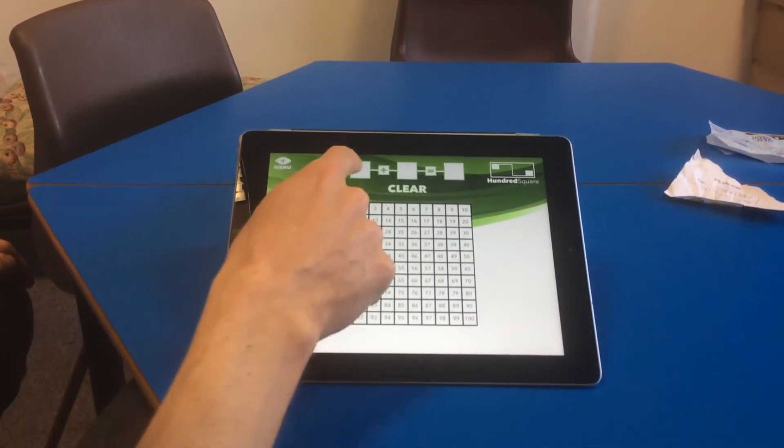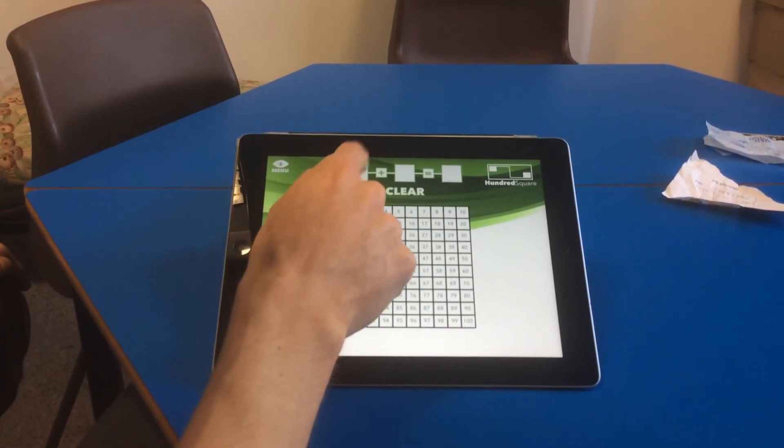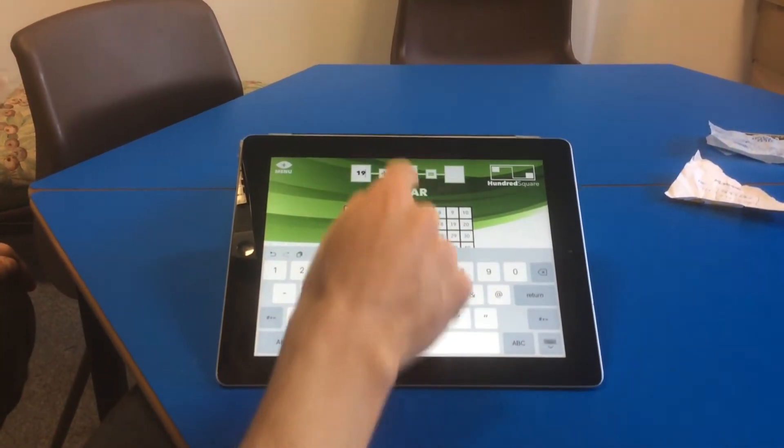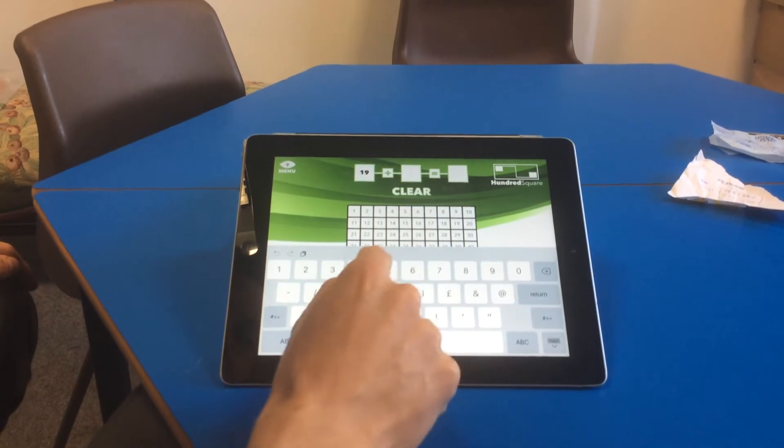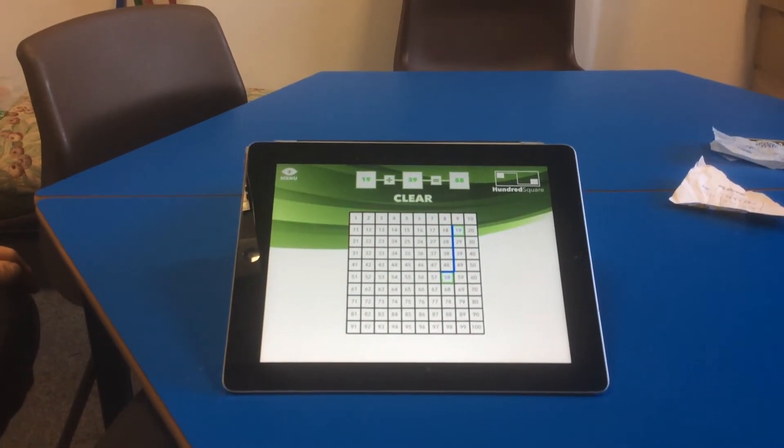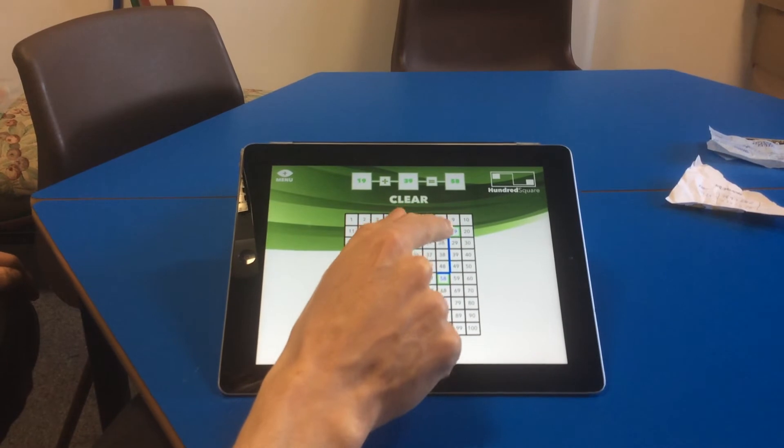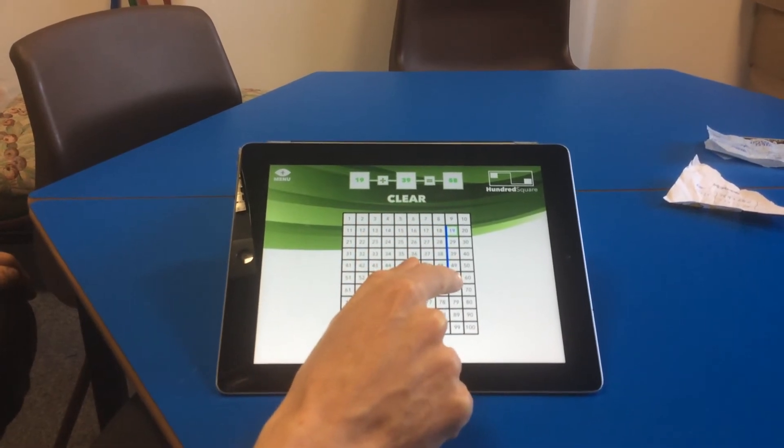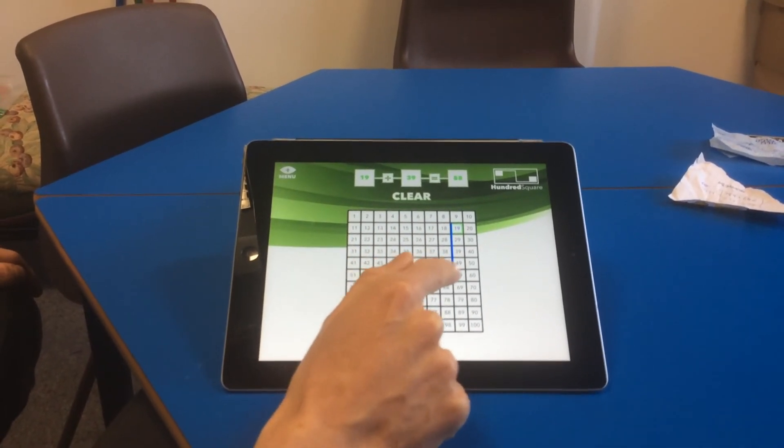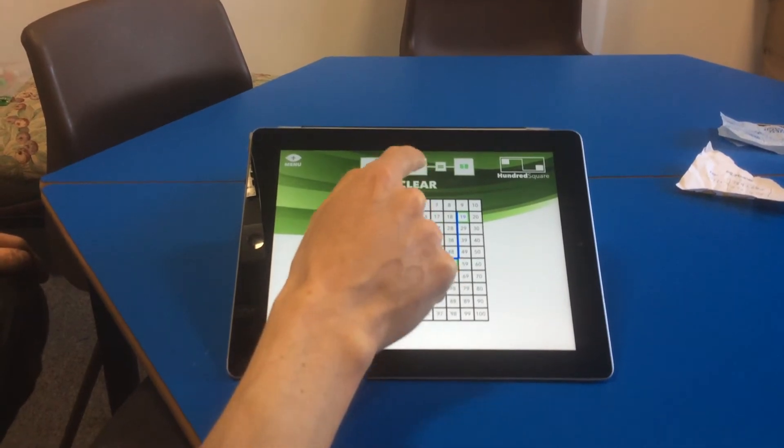If you have a look at the hundred square, let's say I'm doing 19 and I'm adding 39 and again we get this really clear image here of how I'm adding one, two, three, four tens and then I'm going to the left so I'm then subtracting one so in total I'm adding 39.